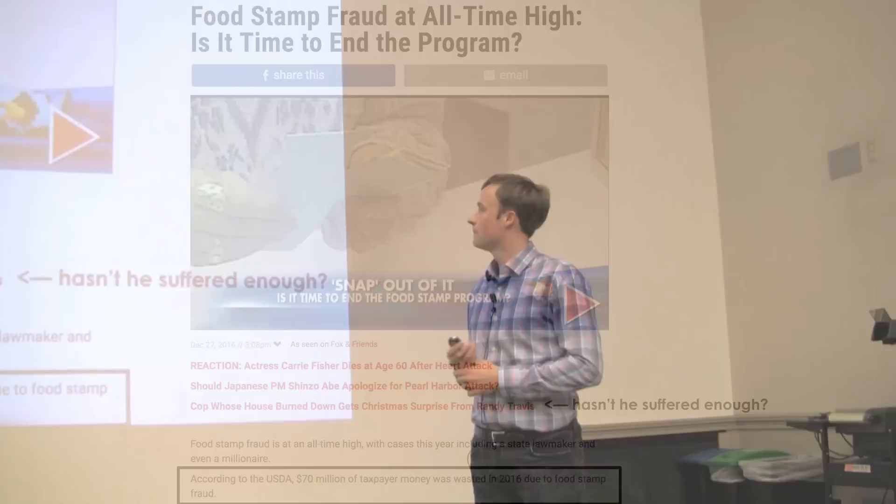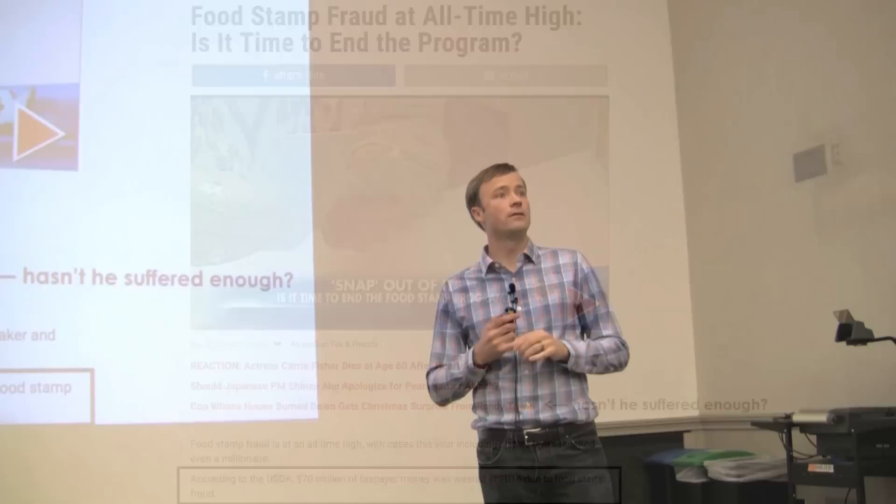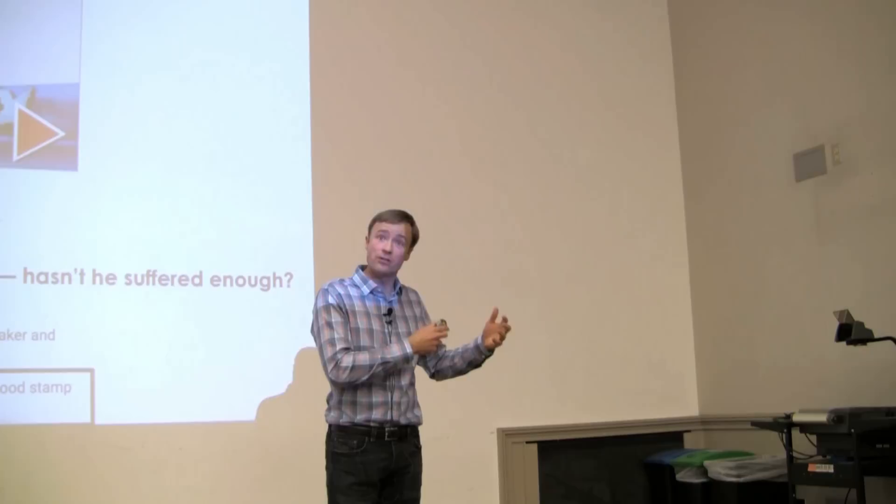This particular story came out not too long ago, got a lot of attention. And the problem that was being stated in the headline in the story was that the U.S. government had wasted $70 million on the food stamp program because it was fraudulent. So the call here was that we should cancel the food stamp program because of all this waste. $70 million. What a waste.